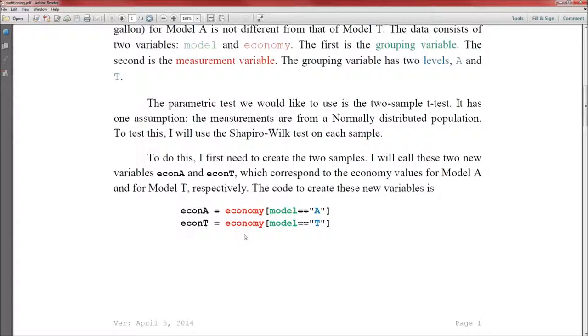So for econT, it's economy, the measurement variable, bracket model, the grouping variable, equal equal, in quotation marks, the level T, then a closing bracket. So when I run these two lines, I'm going to have two new variables, econA and econT. EconA will hold all of the economy values corresponding to those model A cars. EconT will hold all the economy values for all the model T cars. It's as easy as that.